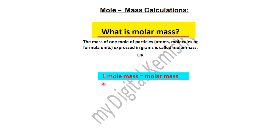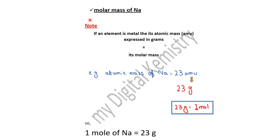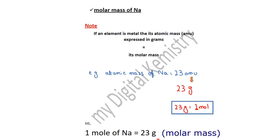Simple words में: one mole mass, molar mass के equal होता है — चाहे वो atom का हो, molecule का हो, या formula unit का हो। Molar mass of sodium calculate करते हैं। अगर कोई element metal है, तो इसका atomic mass जो AMU में express होता है, उसे grams से replace करने पर molar mass मिलता है। Atomic mass of sodium = 23 AMU, इसलिए 1 mole of sodium = 23 grams। यही molar mass of sodium है।